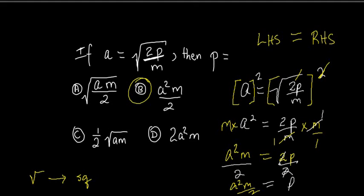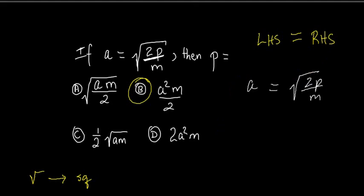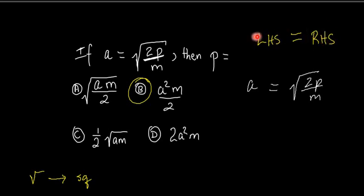There's a faster way we can do this — the transposing method. The square root is affecting everything else, and we want to transpose it from the right-hand side to the left-hand side. Once we transpose from one side to the other, the operation will change. It must move over the equal sign. If you move a term on the same side, the signs won't change, but once it transposes over the equal sign, the operation will change.